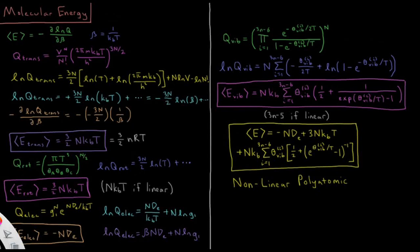In the previous video we developed the partition function for a system of n independent molecules. In this video we're going to compute the average energy of that system of atoms or molecules. We've already done an example showing how to compute the average energy using the probabilities of various states using their Boltzmann factor.